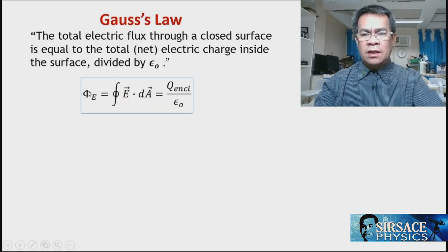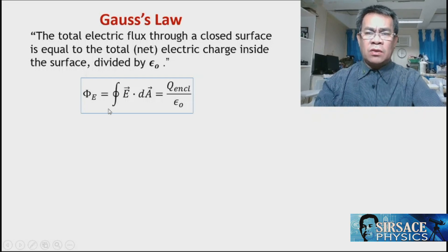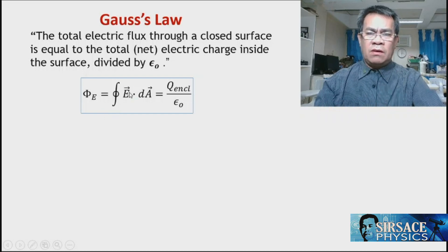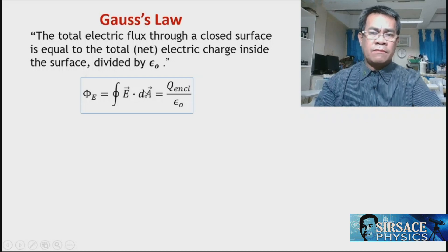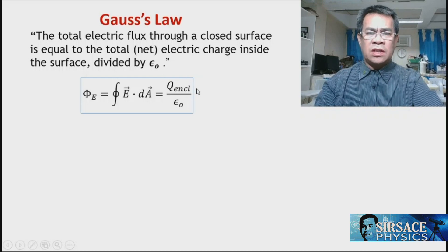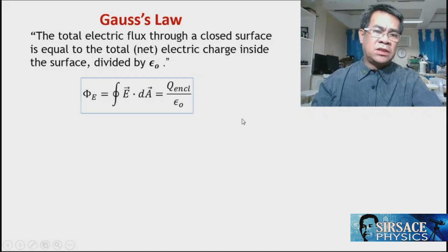the total flux through a closed surface is the dot product of the electric field and the differential area vector, and this is also equal to summing up all the charges — the total charge in the closed surface divided by the permittivity of empty space.